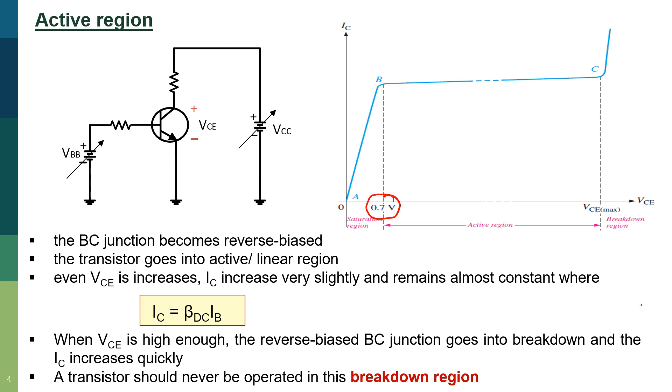When VCE exceeds 0.7V, the BC junction will become reverse biased and the transistor will go into active or linear region. Even as VCE increases, the collector current IC will increase very slightly.